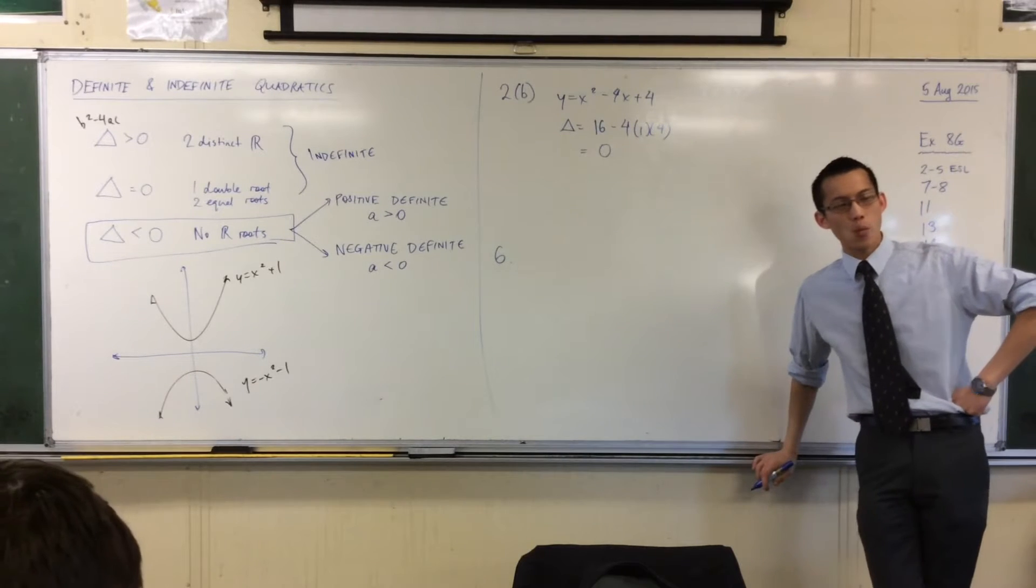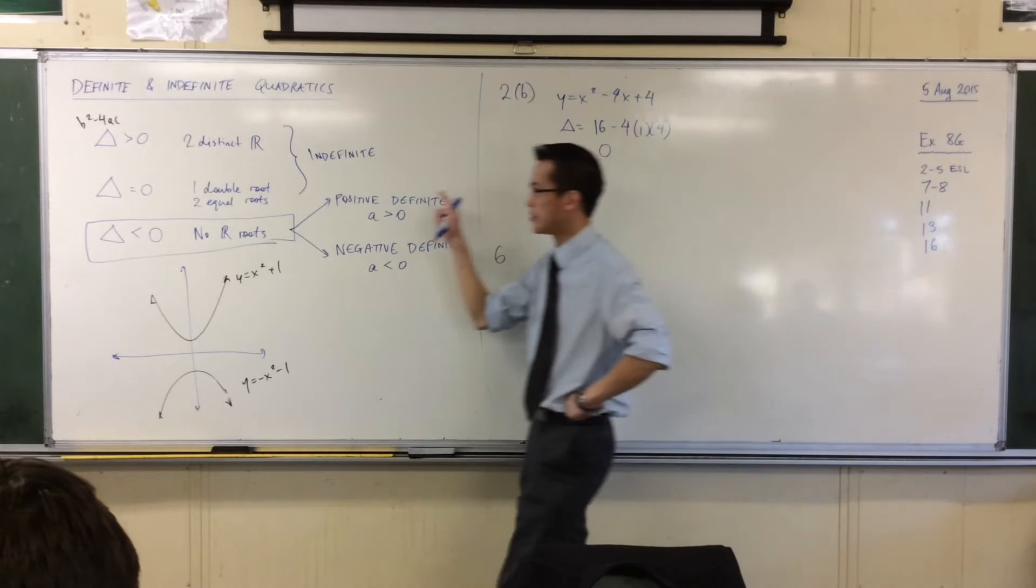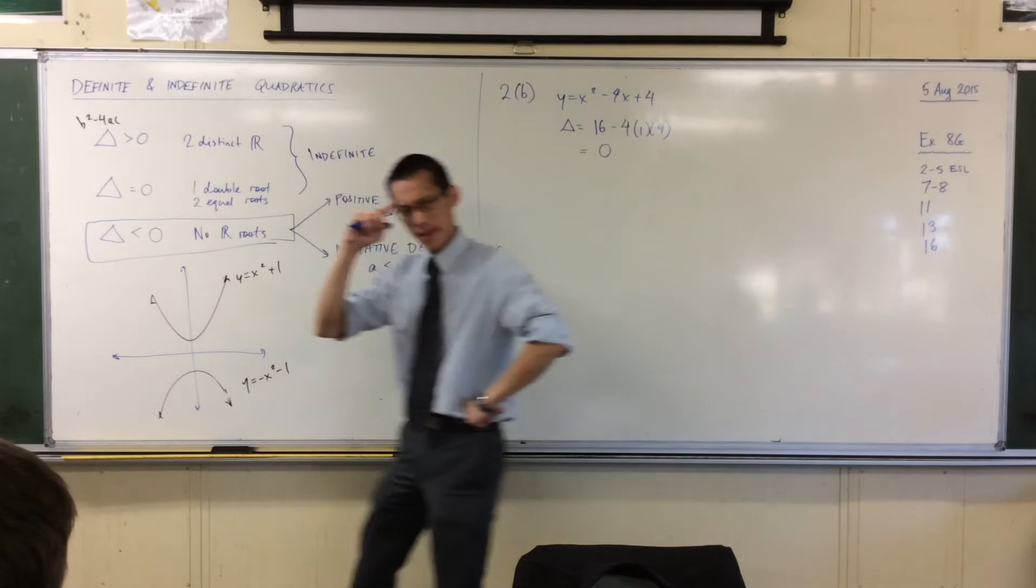Now, without having factorized, this tells us what? It has, number one, it's got a double root. That makes sense, doesn't it?